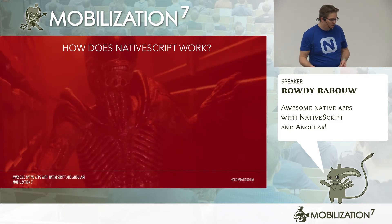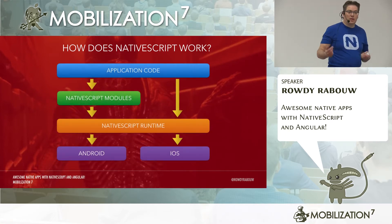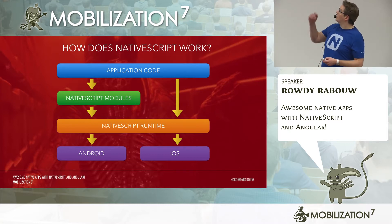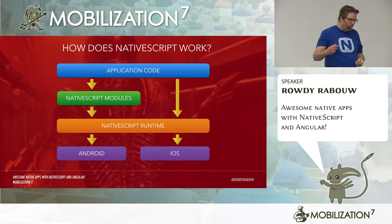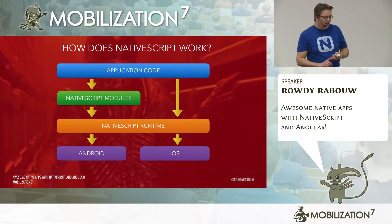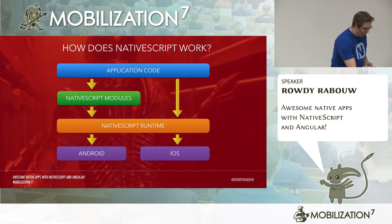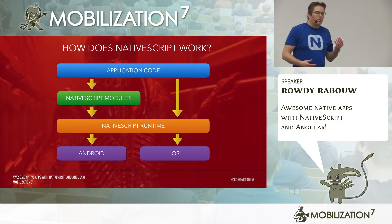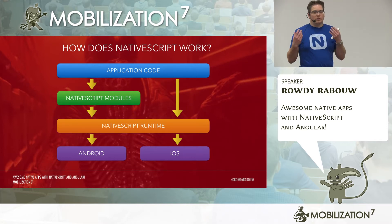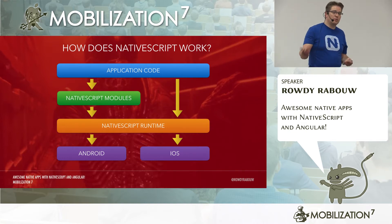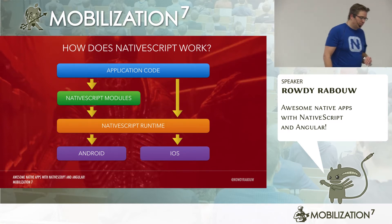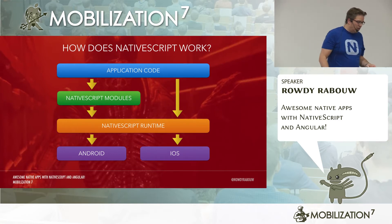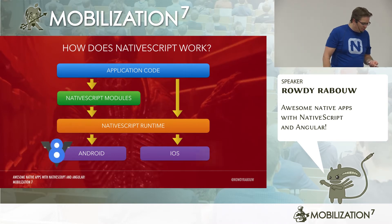How does it actually work? On top you have your application code written in any flavor of JavaScript. That code can directly run on the NativeScript runtime, or it can run through NativeScript modules — such as an HTTP module in the core modules, or plugins for accessing the camera, GPS, and similar features. The NativeScript runtime runs on a virtual JavaScript engine: V8 on Android and JavaScriptCore on iOS.